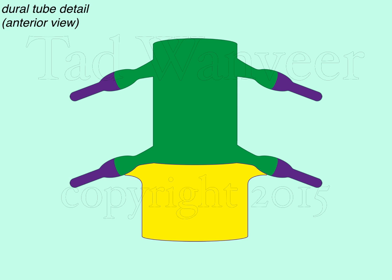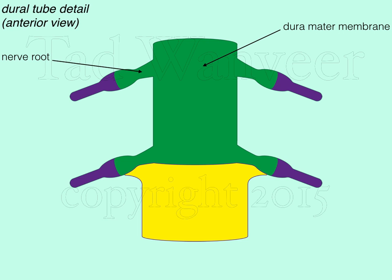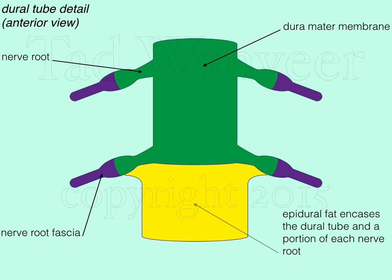Moving on to an anterior view detail of the dural tube. The dura mater membrane is shown in green, the nerve root in green as well, nerve root fascia, and epidural fat shown in yellow encasing the dural tube. The epidural fat also encases portions of the nerve root. Although epidural fat is not found within the dura mater membrane itself, at the nerve root levels there is some epidural fat, helping to cushion the nerve roots externally and soften the dura at the nerve roots.